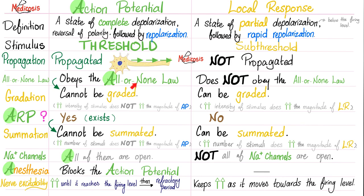If you give me less than a threshold, I'll give you zero — nothing. If you give me a threshold, I'll give you one. Can you give me one and a half? No — it's either zero or one; action potential cannot be graded. The local response can be graded because it does not obey the all or none law. Absolute refractory period exists in action potential, and that's why it cannot be summated. Local response has no absolute refractory period, therefore it can be summated.